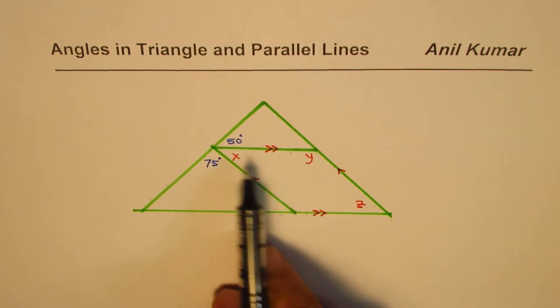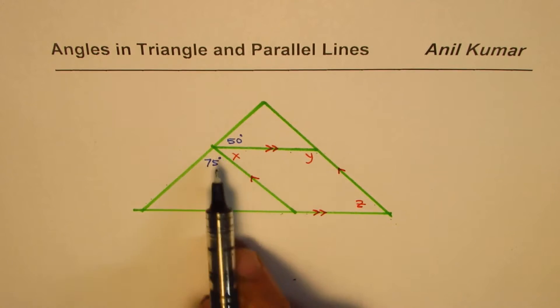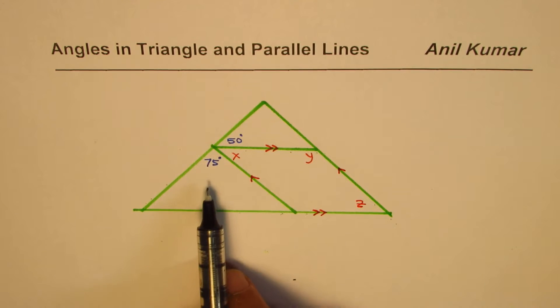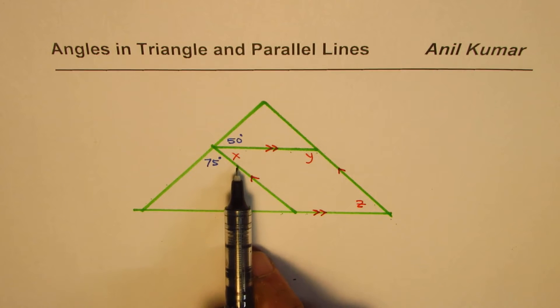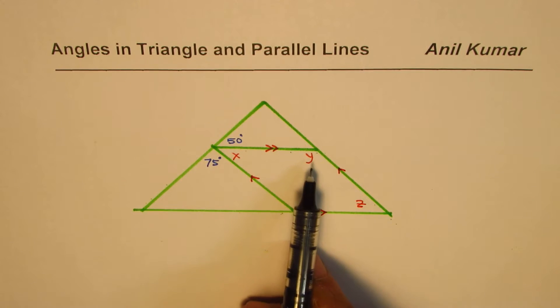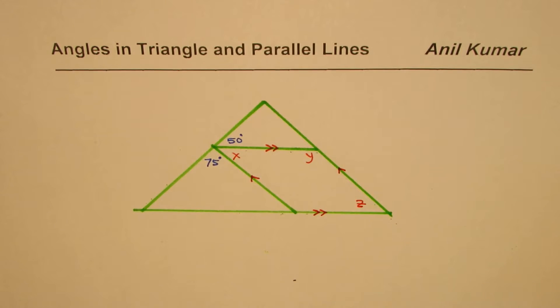In this diagram, you will note that there are two parallel lines. And we are given two angles, 75 degrees and 50 degrees. You need to find the angle x, y, and z.